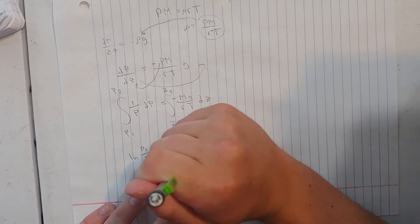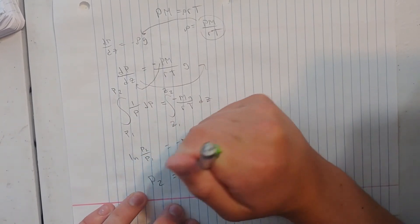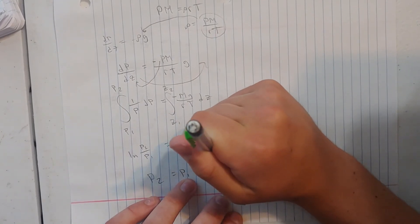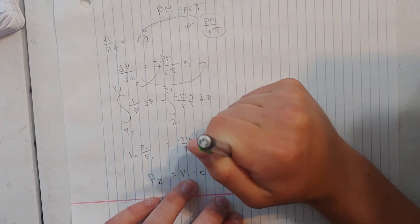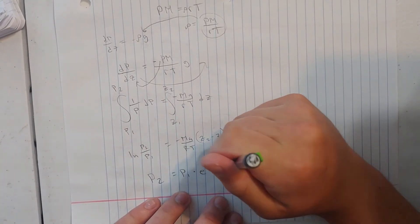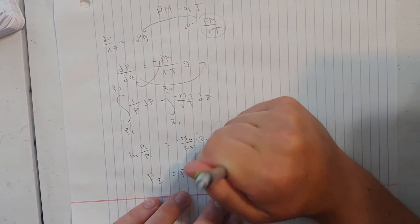And when you rewrite that, solve for p2, you get p2 equals p1 times e. And the exponent of e is going to be minus mg times your change in altitude (z2-z1) over RT.